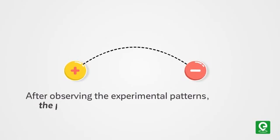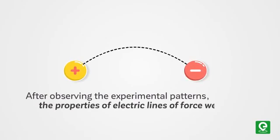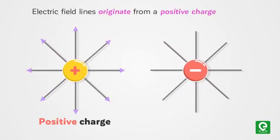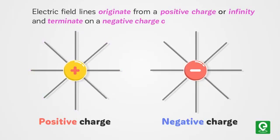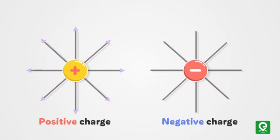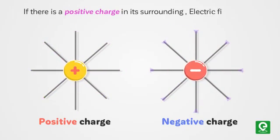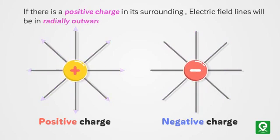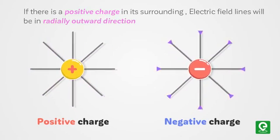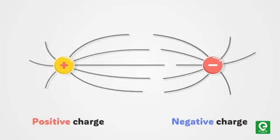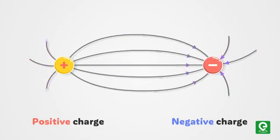After observing experimental patterns, the properties of electric lines of force were stated. Electric field lines originate from a positive charge or infinity and terminate on a negative charge or infinity. If there is a positive charge, its surrounding electric field lines will be in a radially outward direction.